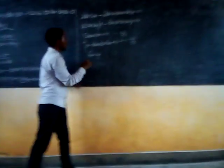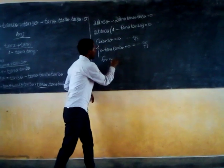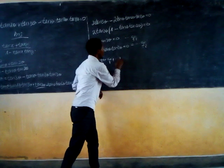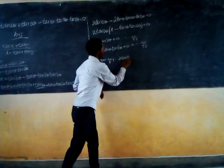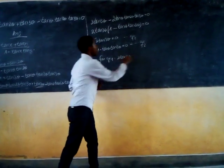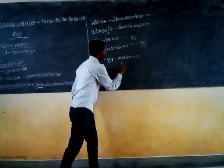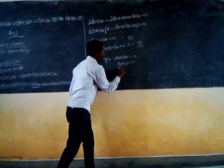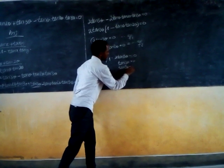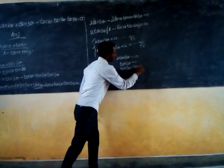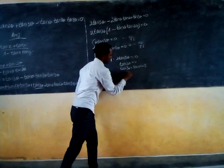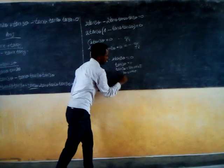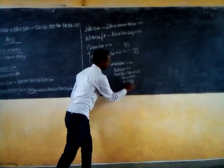For equation number 1: tan(3θ) must equal zero. tan(3θ) equals zero means tan(3θ) equals tan(0 + kπ). So 3θ equals kπ, and therefore θ equals kπ over 3.